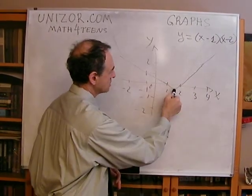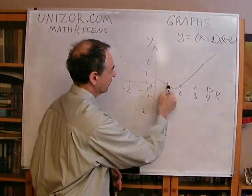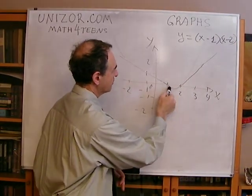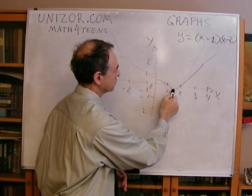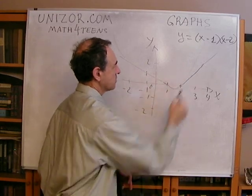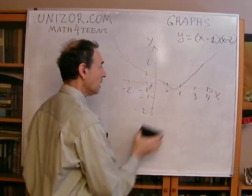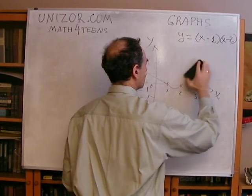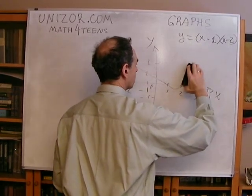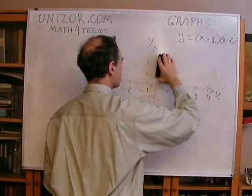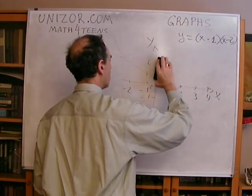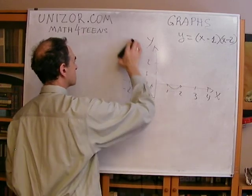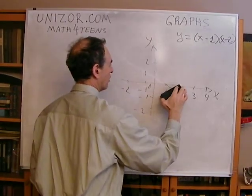When the function crosses x = 1, it changes value from positive to negative, and same thing at x = 2. That's just one of the very important characteristics of the function: when exactly it takes the value of zero.